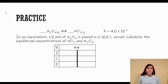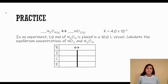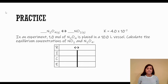In this experiment, 1.0 moles of N₂O₄ is placed in a 10-liter vessel. Calculate the equilibrium concentrations of NO₂ and N₂O₄. We have this little table — we call it the RICE table. R stands for the reaction, I is the initial concentrations or initial partial pressures, C is the change, and E is the equilibrium.